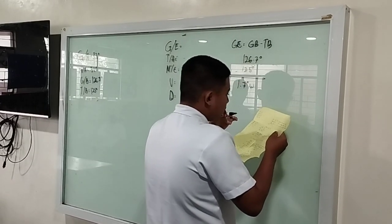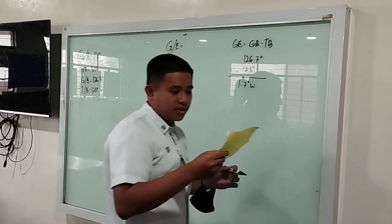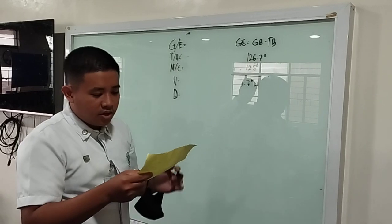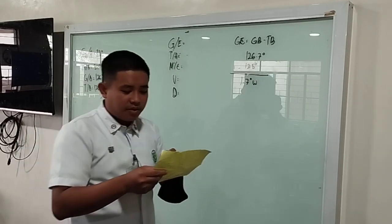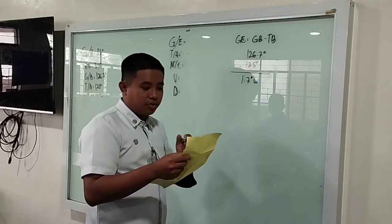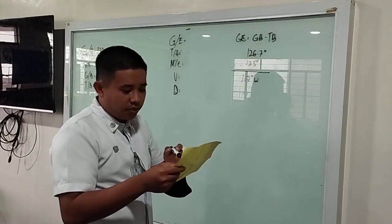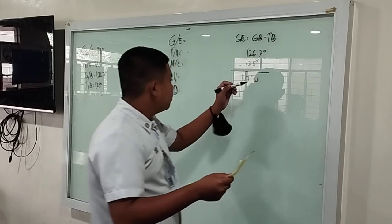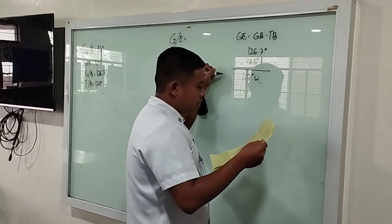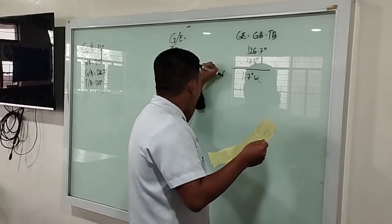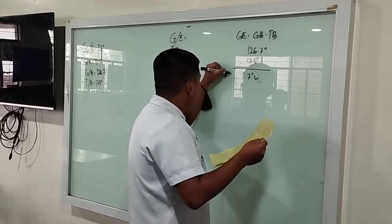Compass best, error west. The gyro bearing 126.7 is higher than true bearing, so we put the sign West. This is our gyro error: 1.7 degrees West.